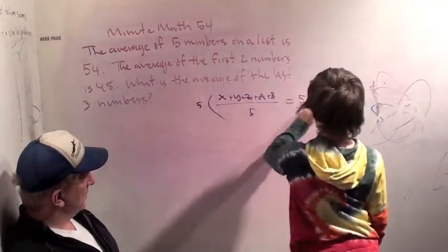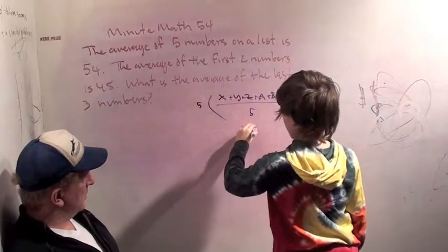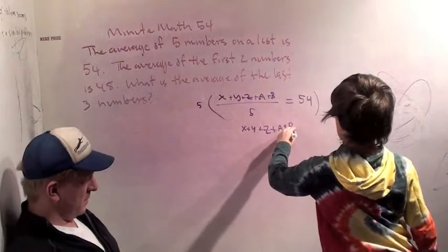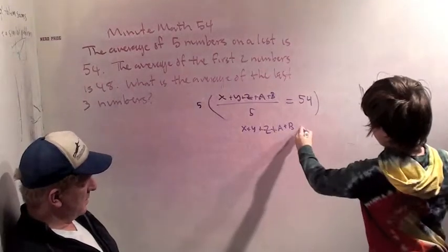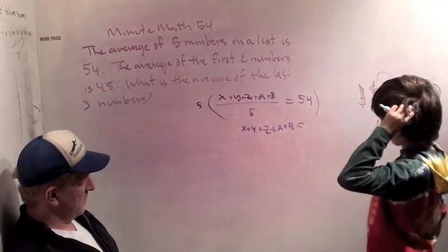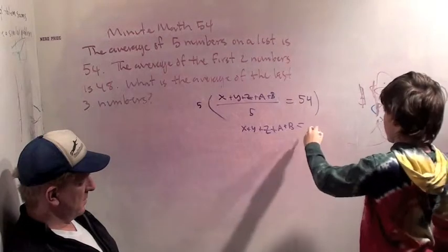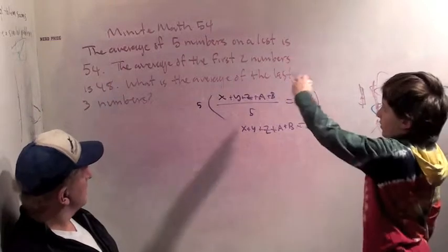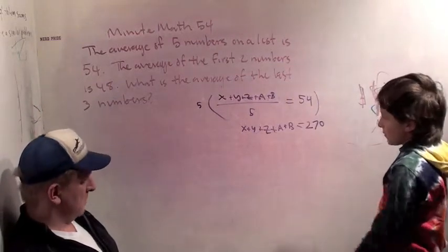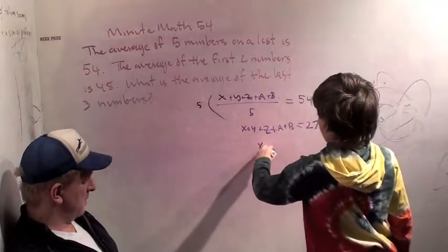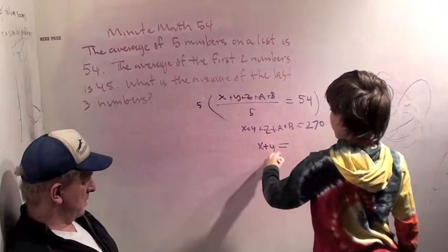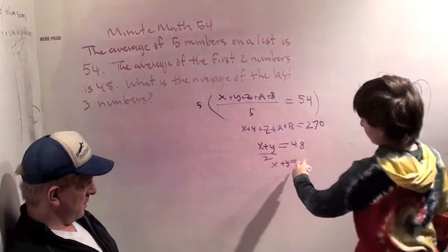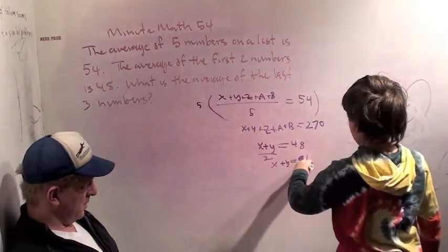If you multiply the entire thing by five, we get x plus y plus z plus a plus b equals 54 times 5 is 270. So, and we also know that the average of the first two is 48. So x plus y over 2 is 48. And x plus y equals 96.